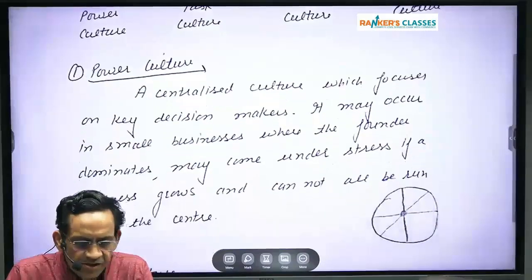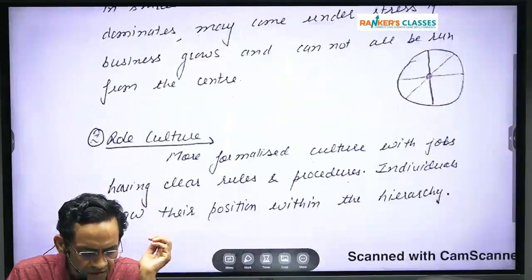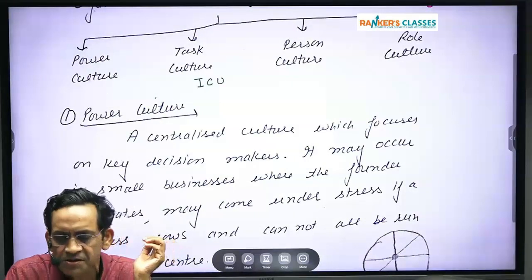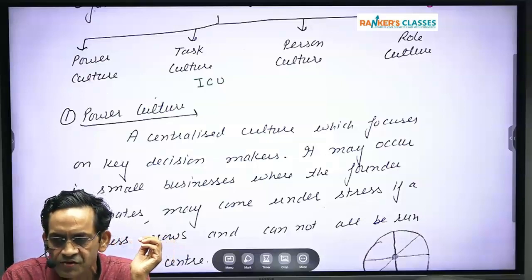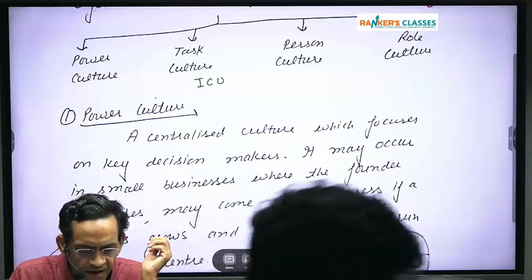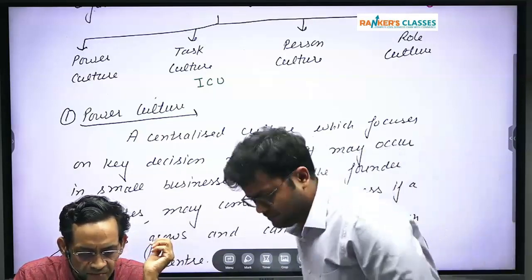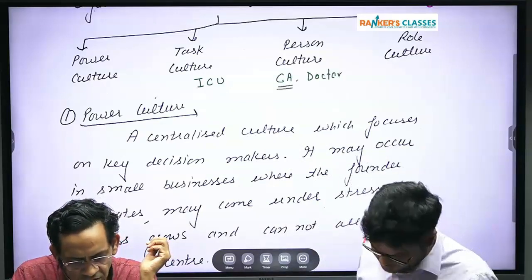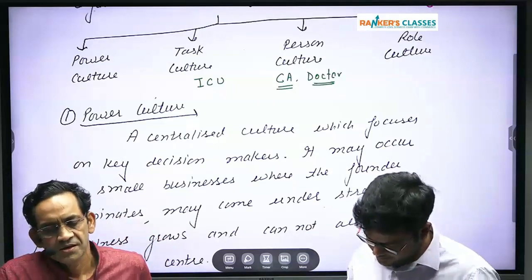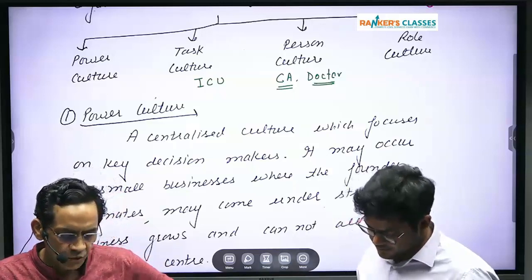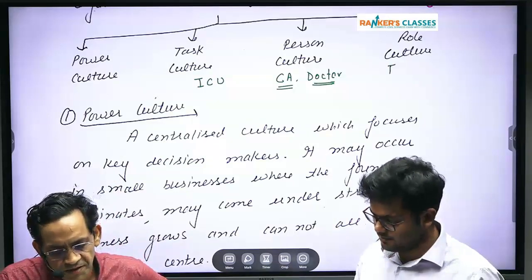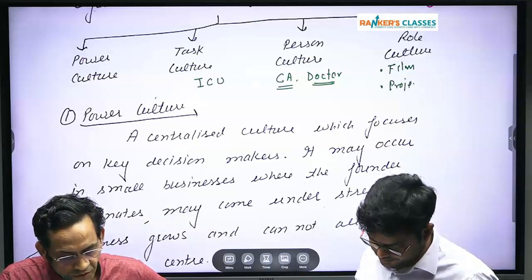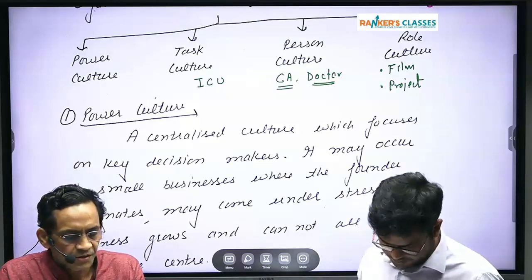Task culture is one where instead of power, the task is important. For example, in an ICU, the tasks performed by nurses and various workers are more important. Person culture — for example, a CA firm or doctors — in such organizations, persons are dominant and they are drivers of the culture. In role culture — for example, filmmaking — the character or role is important, as in project work.